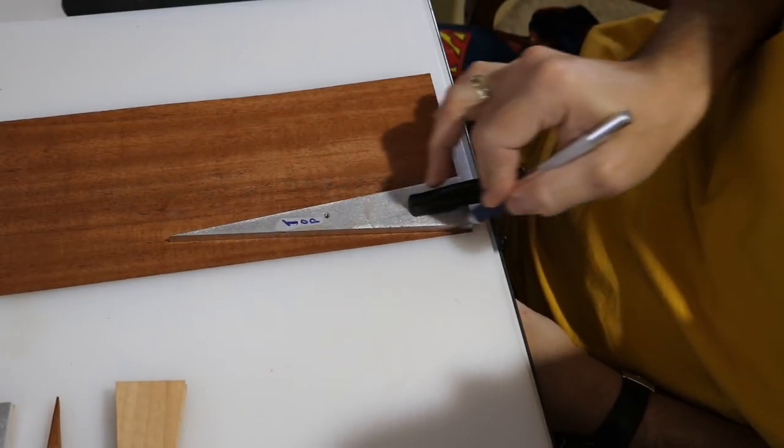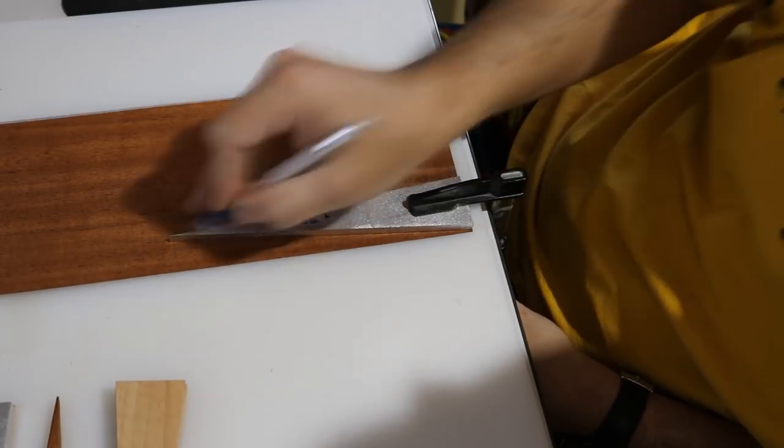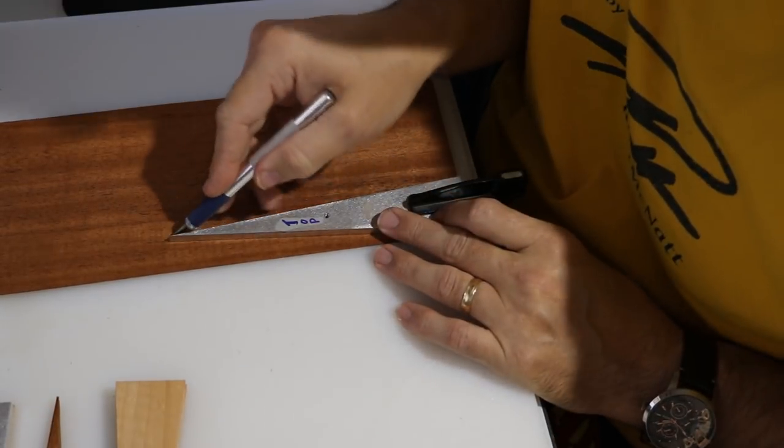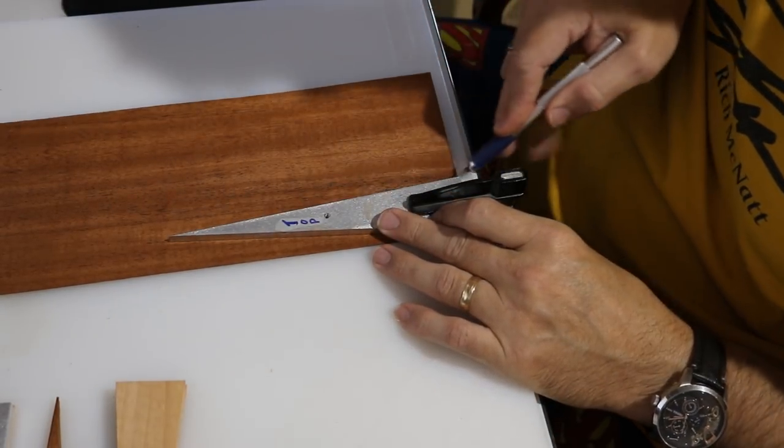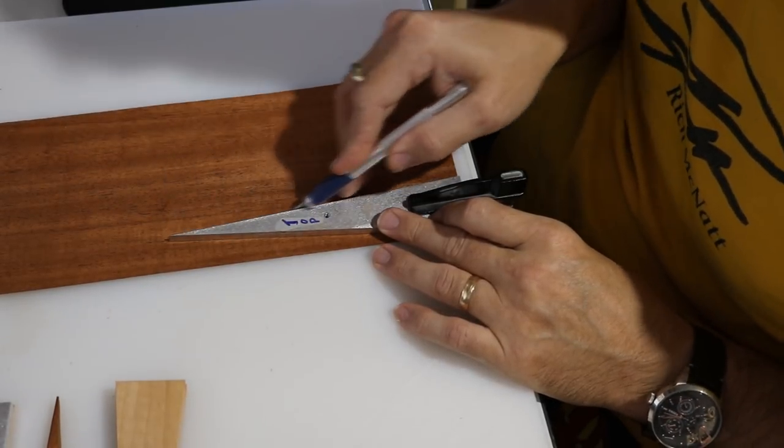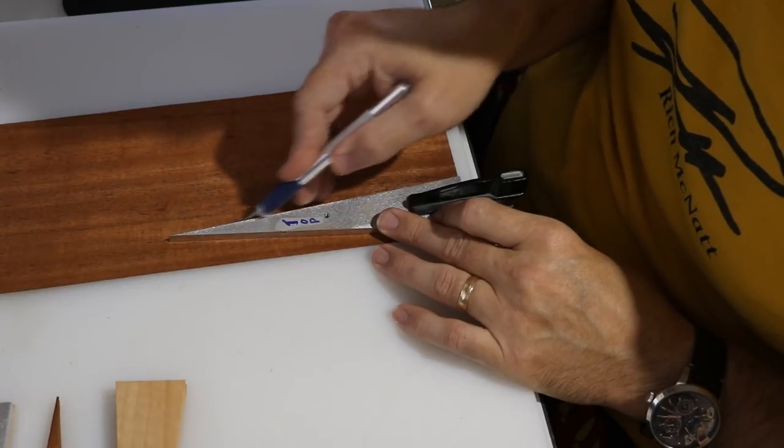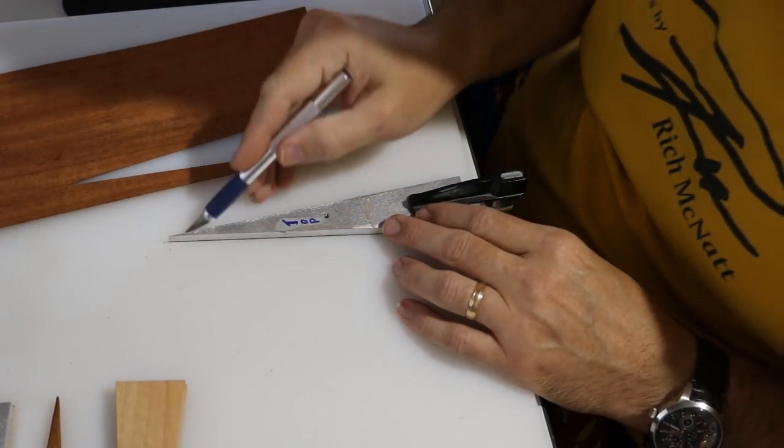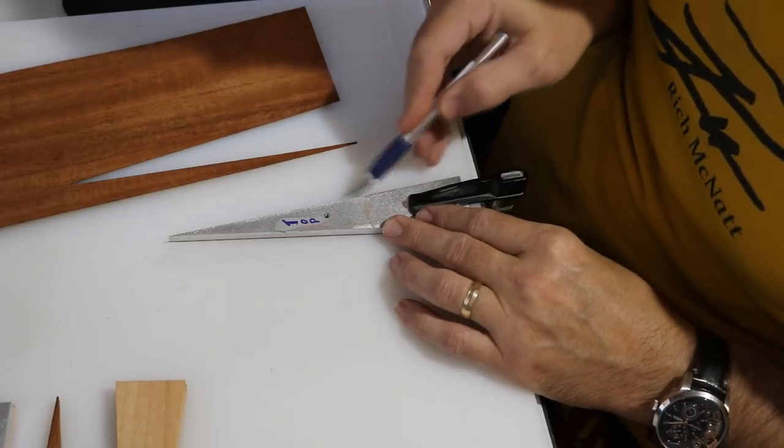I used those triangles to cut the veneer pieces with an Xacto knife and this method actually worked out fantastic. The triangles were near perfect and the only thing I had to do was joint the edges and tape them together. You'll see that here in a few minutes.